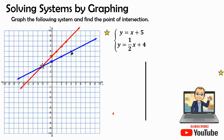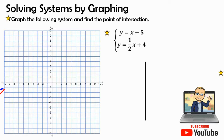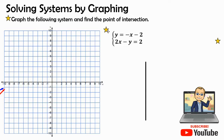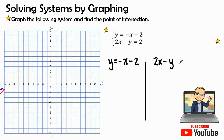Let's erase all of this and try it once more. We'll put our lines back off to the side. Our next system is y equals negative x minus two and two x minus y equals two. Let's write both equations out: y equals negative x minus two, and two x minus y equals two. I'll color them so we know which line represents each equation.